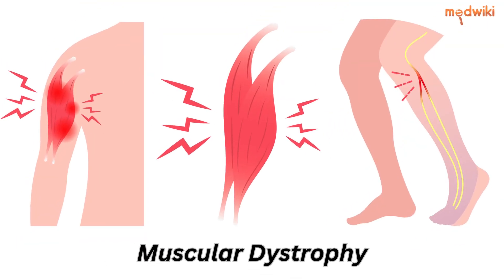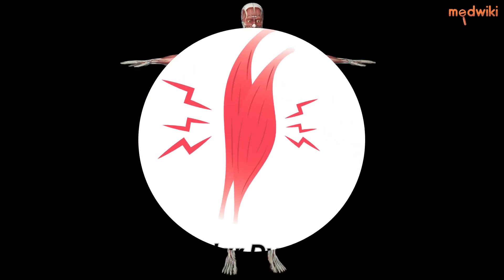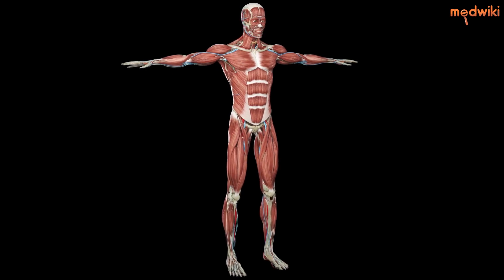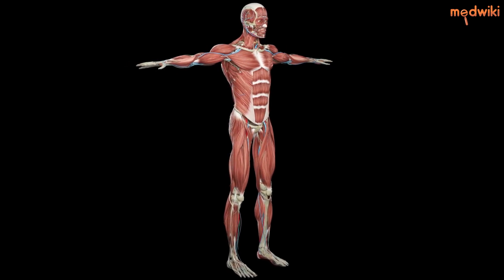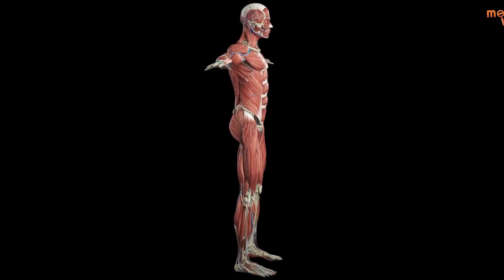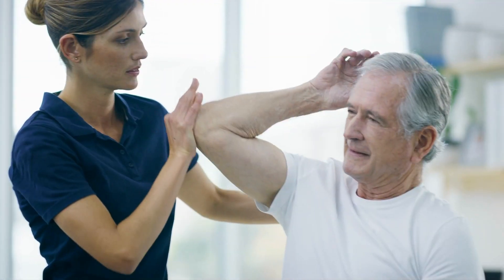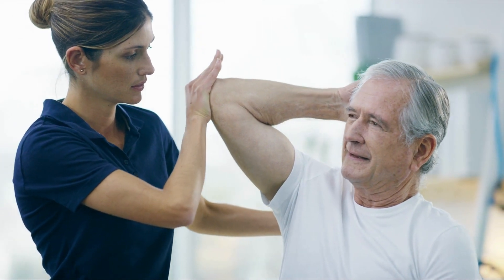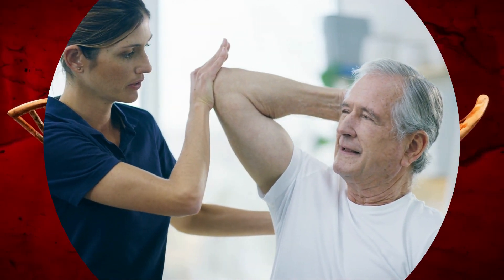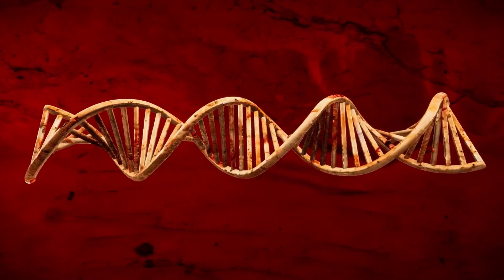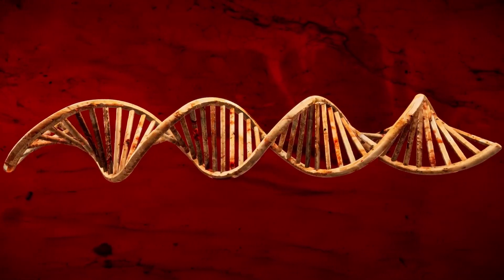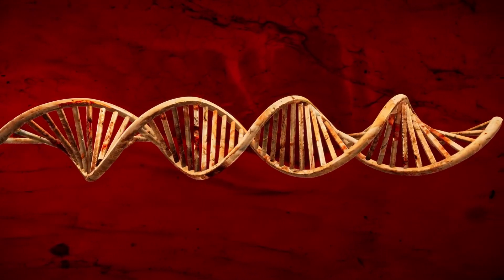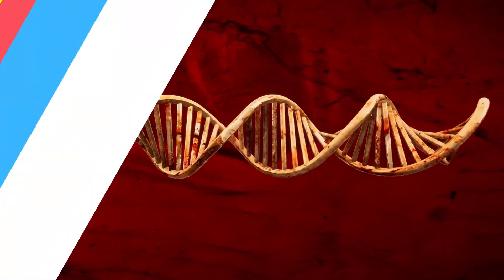Do you know what muscular dystrophy is? It's a condition that affects your muscles and makes them weak over time. But why does this happen? Well, it's because of mutations in your genes that cause problems with the production of proteins necessary for muscle function.